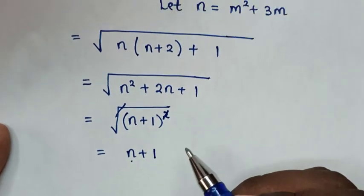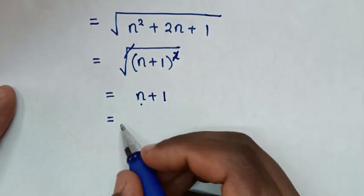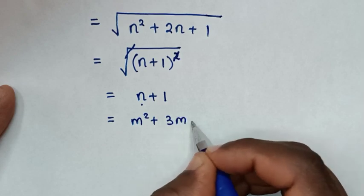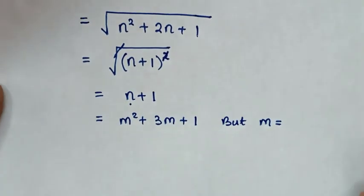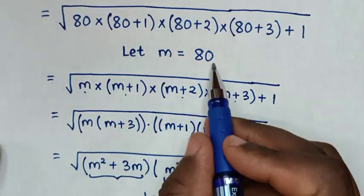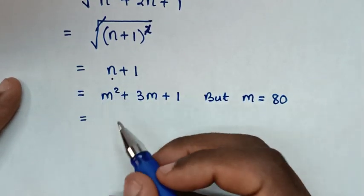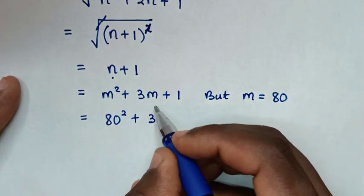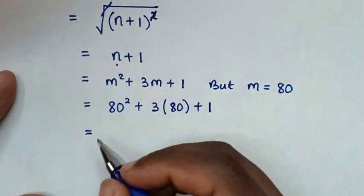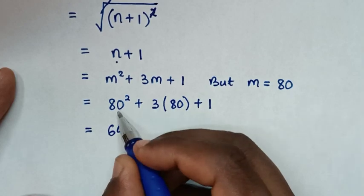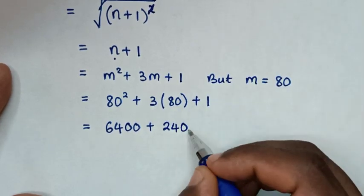But n is m²+3m, so substituting back, it will be m²+3m+1. Also, m is 80, so it equals 80² + 3×80 + 1, which is 6400 + 240 + 1.